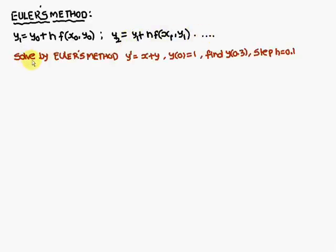The given problem to be solved by Euler's method: y dash is equal to x plus y, y of 0 is equal to 1. Find y of 0.3, with step size h equal to 0.1. Remember, h is equal to 0.1.